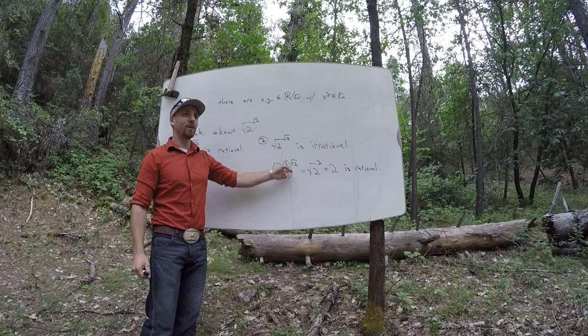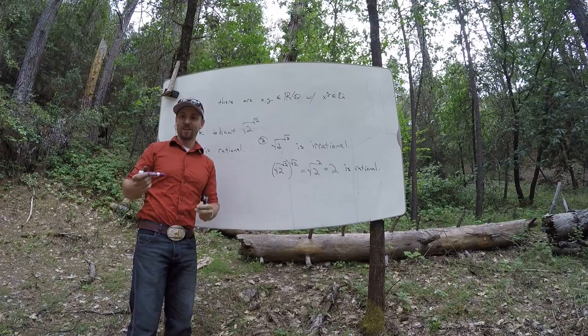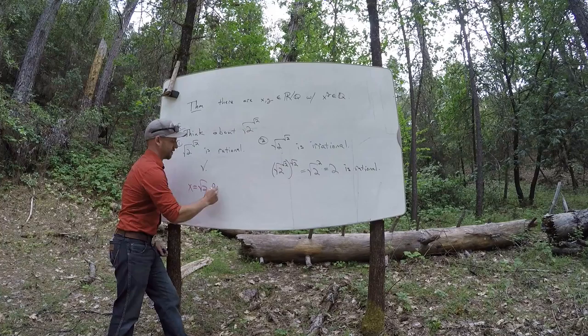Or, square root of 2 to the square root of 2 and square root of 2 are the irrationals, right? Or are the irrationals? So since it's like either case, you know one of them exists.